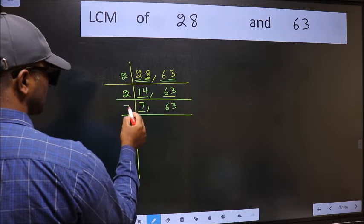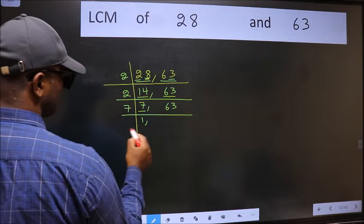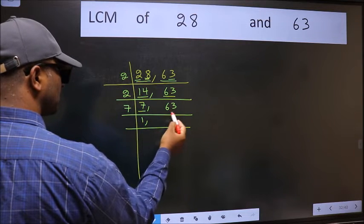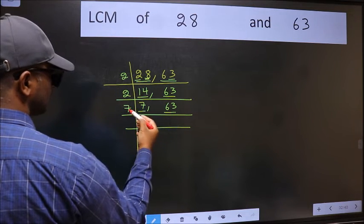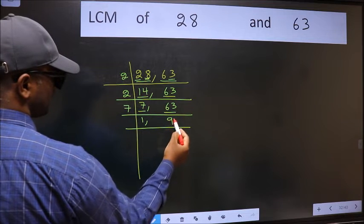Now here we have 7. 7 is a prime number. So 7 times 1 is 7. The other number 63. When do we get 63 in the 7 table? 7 times 9 is 63.